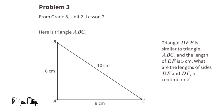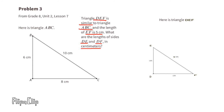Problem number 3 from 8th grade, Unit 2, Lesson 7. Here is triangle ABC. Triangle DEF is similar to triangle ABC, and the length of EF is 5 centimeters. What are the lengths of sides DE and DF? Side EF is 5 centimeters, which is half of 10 centimeters — the length of corresponding side BC on triangle ABC. So all corresponding sides of triangle DEF are half those of triangle ABC. Half of 6 centimeters is 3 centimeters, and half of 8 centimeters is 4 centimeters. The length of side DE is 3 centimeters and side DF is 4 centimeters.